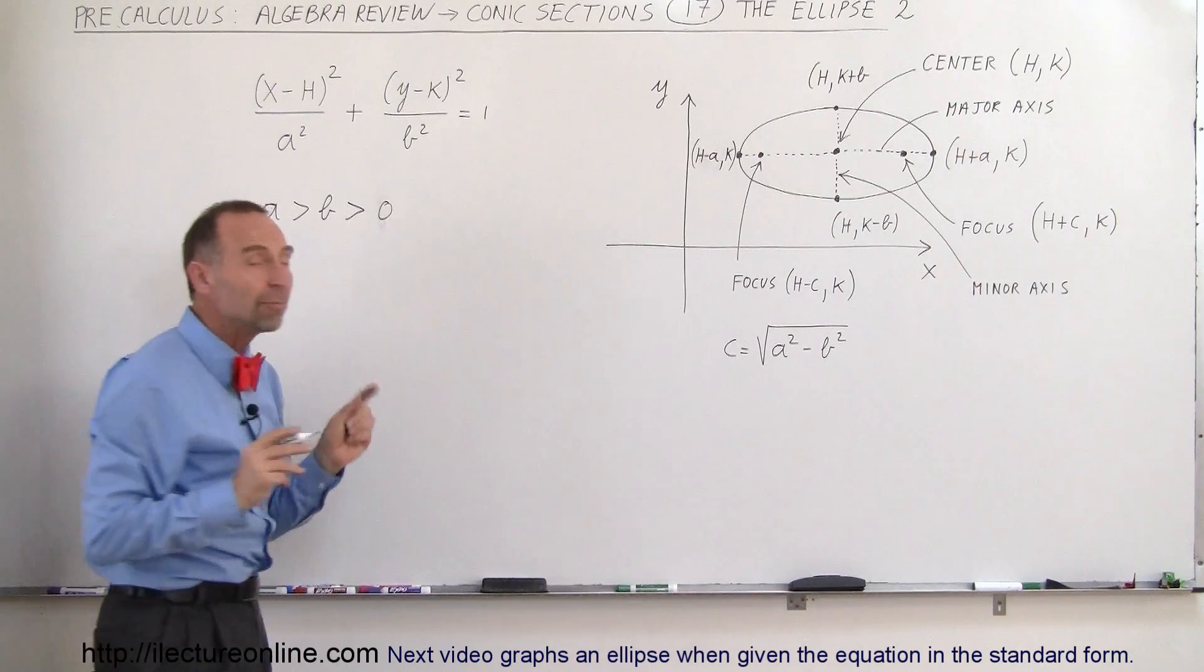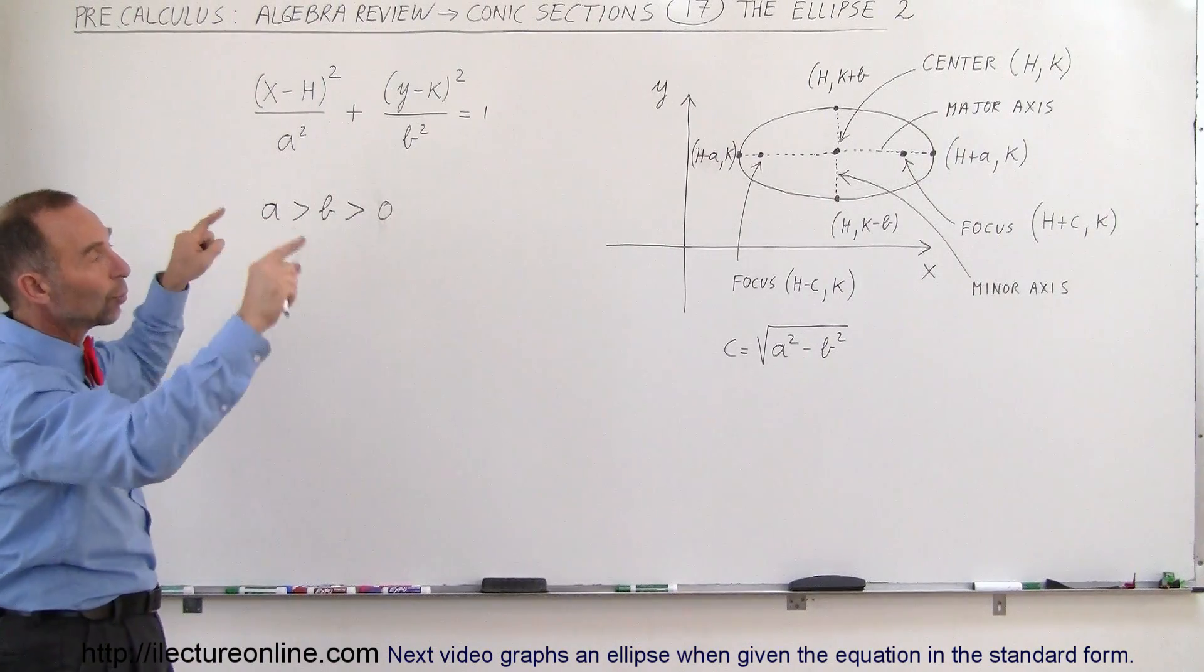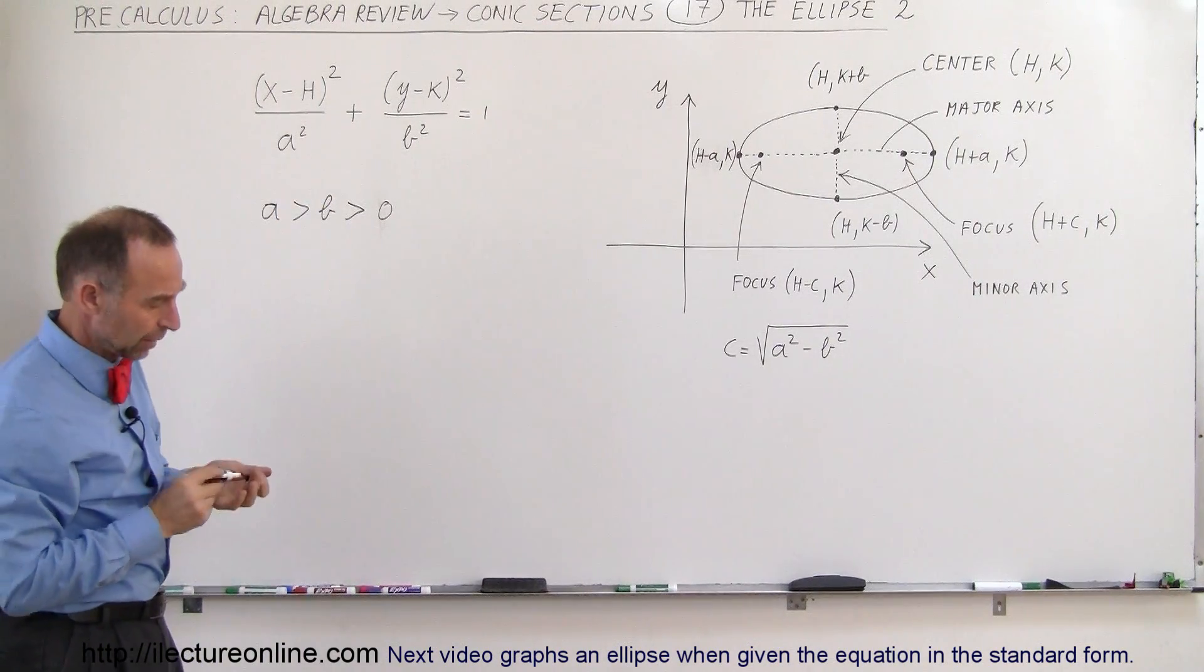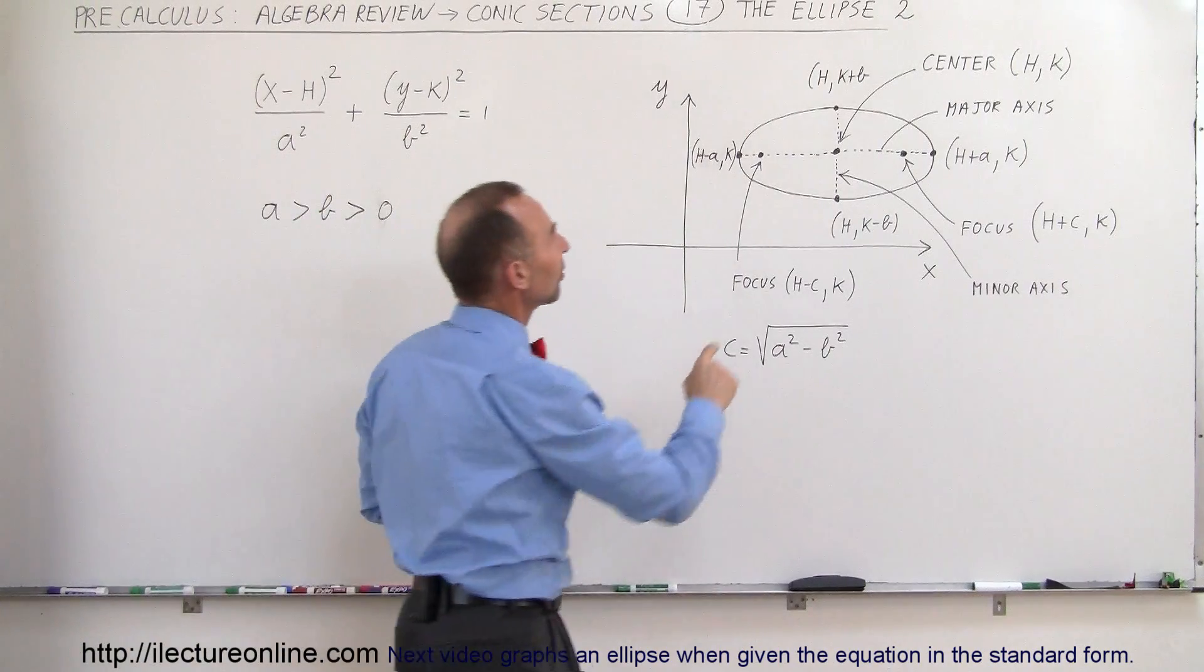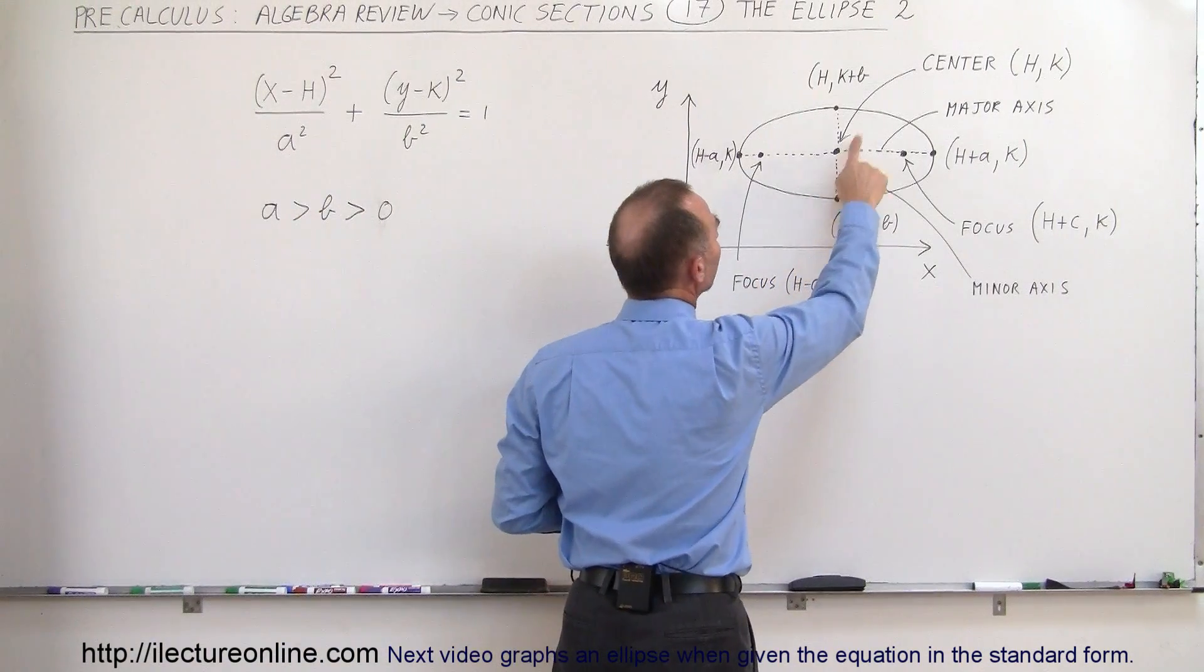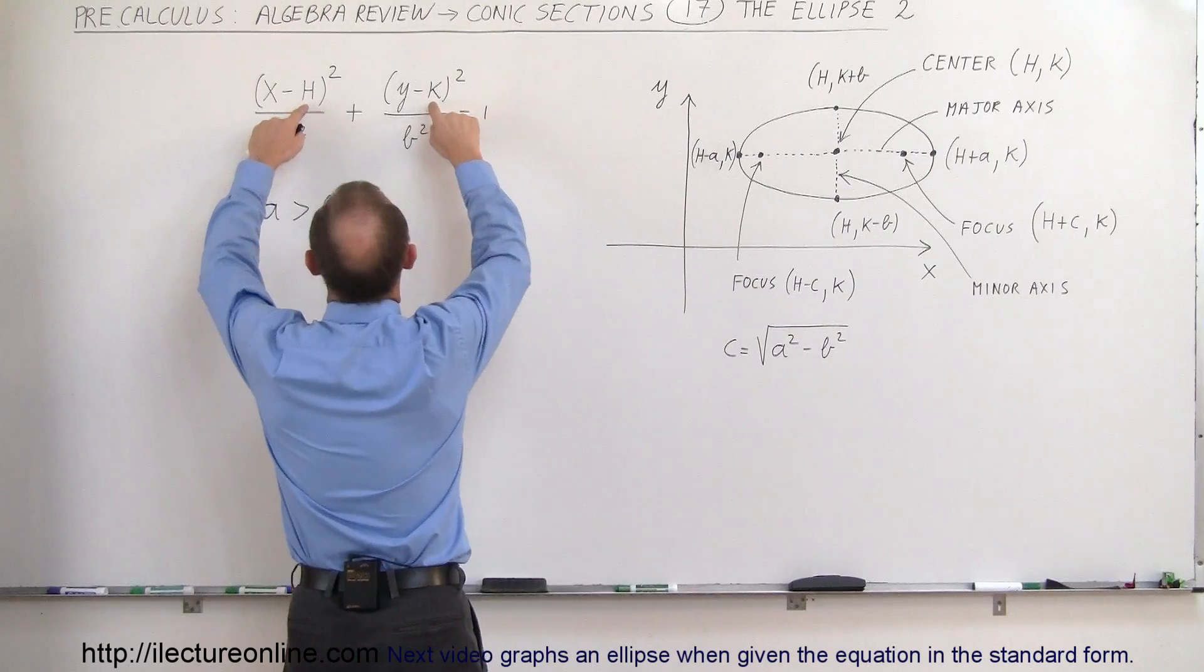But a being larger than b simply means that the ellipse will be sideways instead of vertical. Secondly, notice where the center is located. The center is located at h and k, which are these two numbers right here.